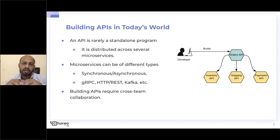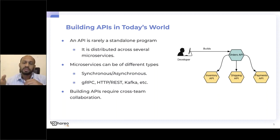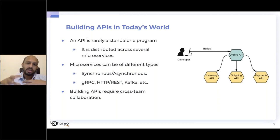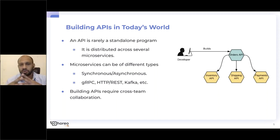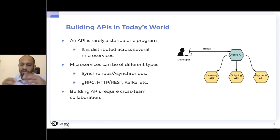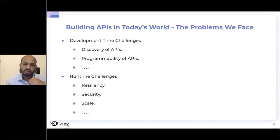There are different styles and types of APIs you have to deal with. Most often you'll need cross-team collaboration, because there are APIs built by other teams that you want to reuse. For example, if another team has built a products API and you want to reuse some of that functionality, it makes no sense to build it yourself — it makes sense to reuse what they have.